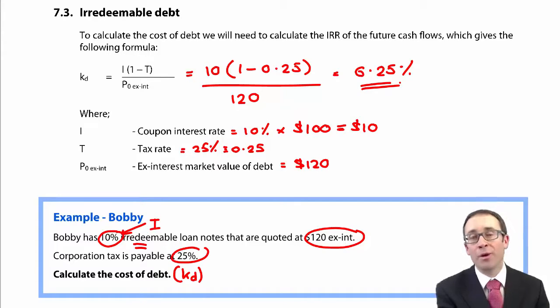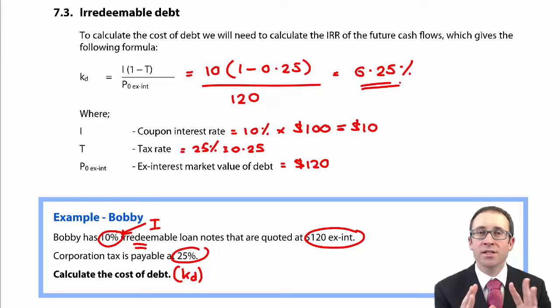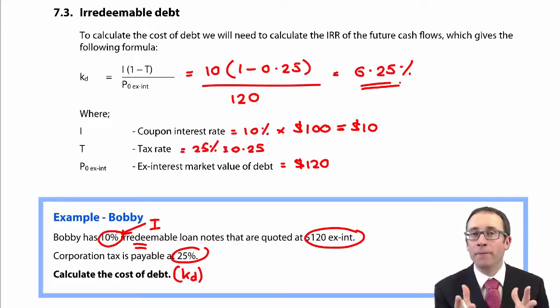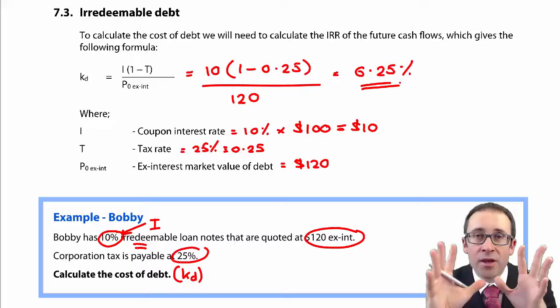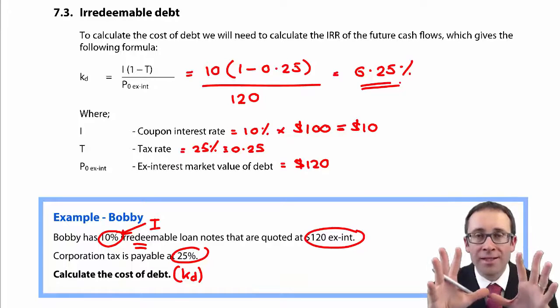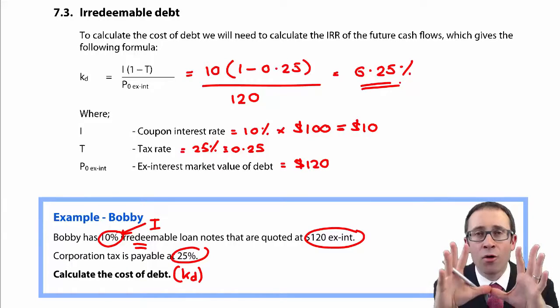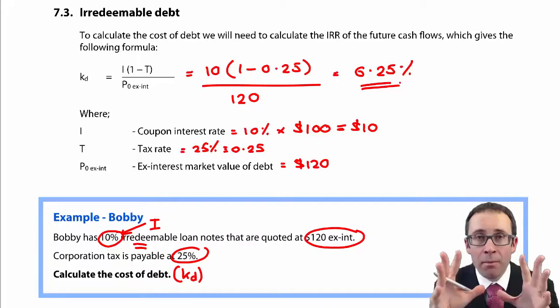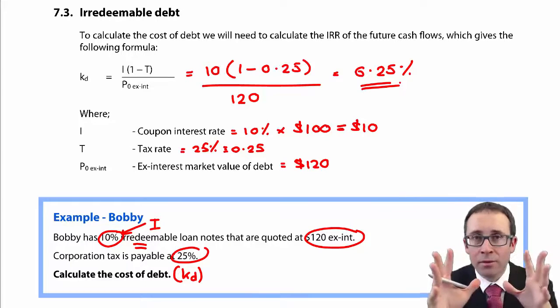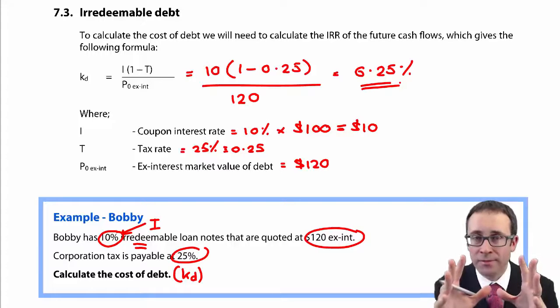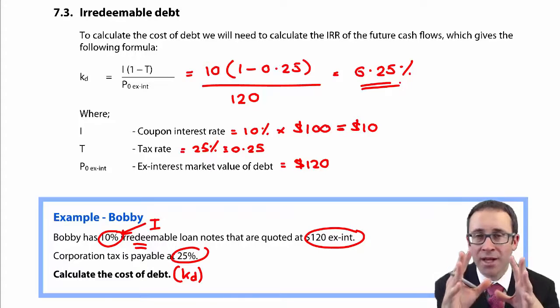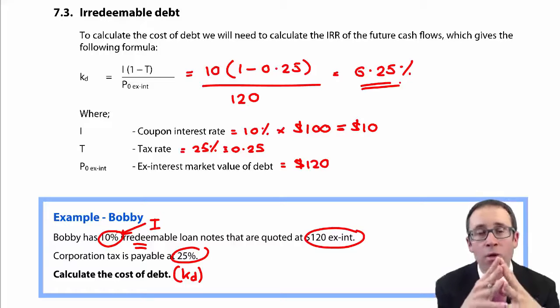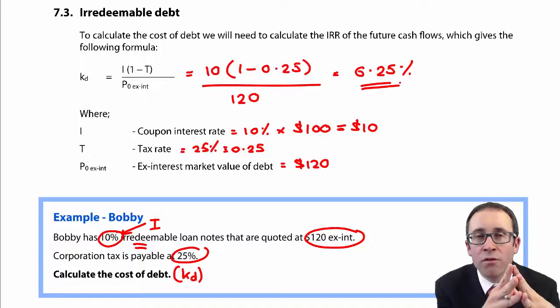However, what becomes more complicated is when we throw into the questions redeemable debt, convertible debt, and you start to get mixed up between them all. The key bit you have to take from the example and any question is if it is irredeemable, you can use the formula. As we will see afterwards, if it's redeemable or convertible, there is no formula.